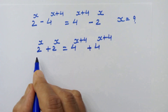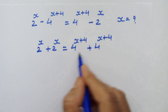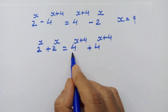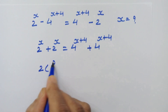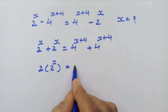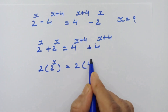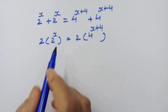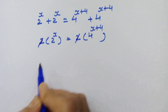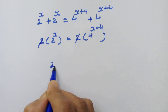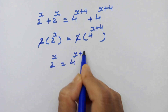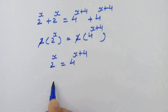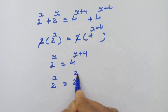Now here we have 2 times 2 raised to x, and here 2 times 4 raised to x plus 4. So we can write 2 into 2 raised to x is equal to 2 into 4 raised to x plus 4. This 2 will get cancelled, so we have 2 raised to x is equal to 4 raised to x plus 4.